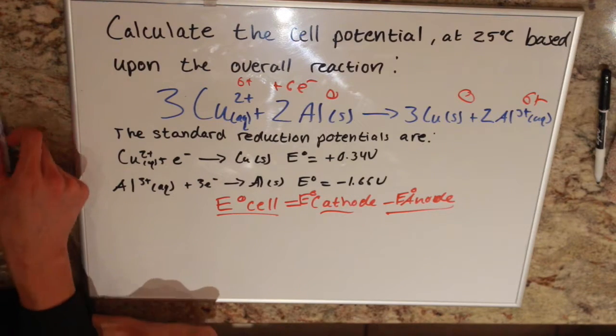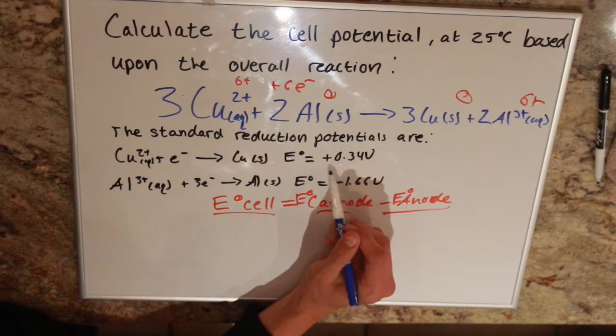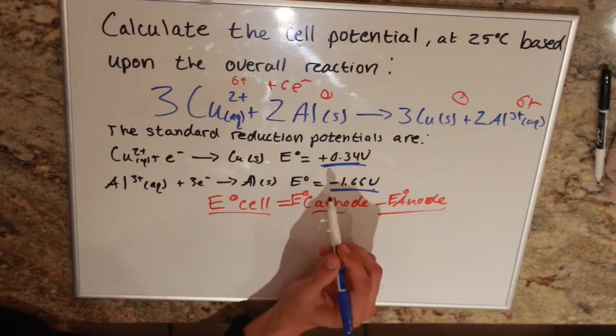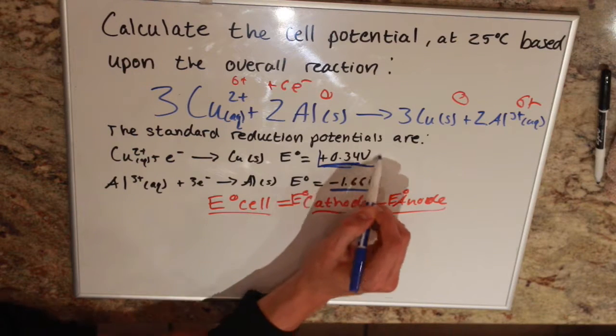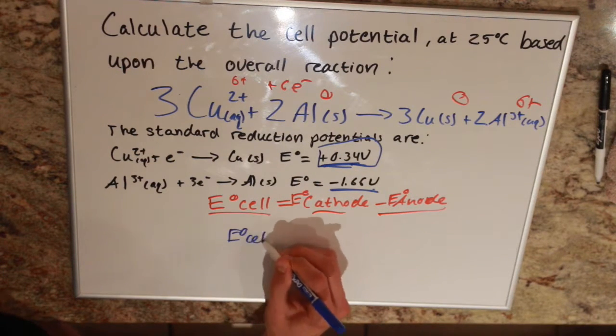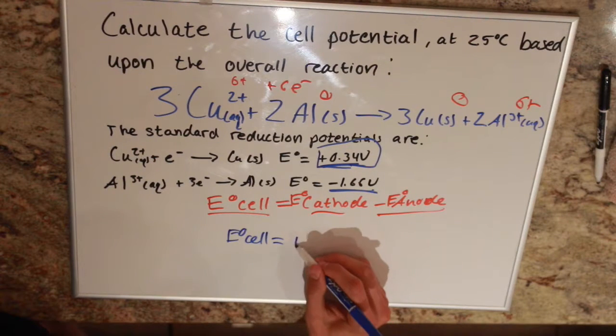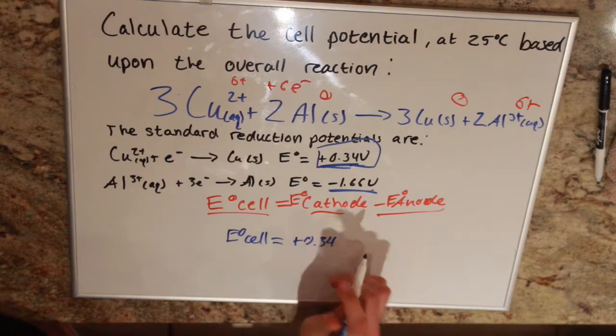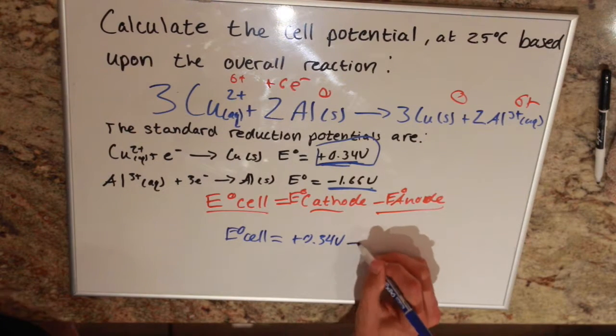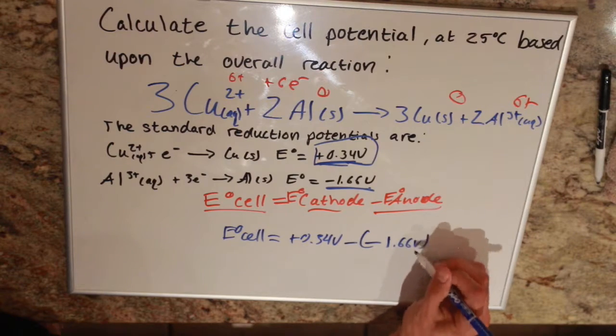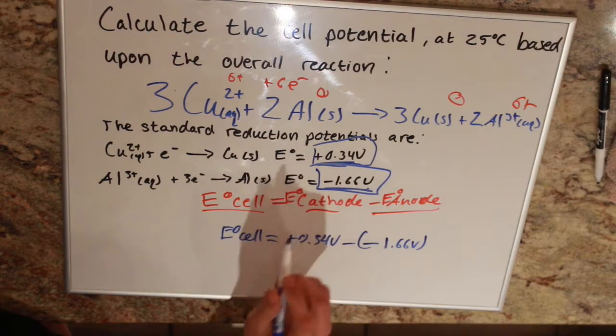So pretty simple. All I have to do is take our two cell potentials, our cathode being the copper. We have our cell potential is equal to positive 0.34 volts minus negative 1.66 volts of our anode, or aluminum.